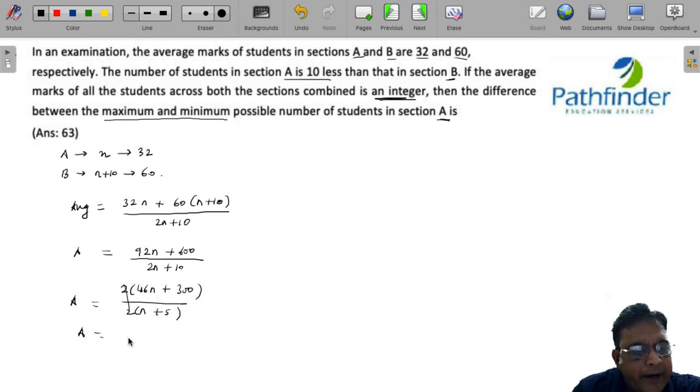I can write 46N plus 300 as 46 into N plus 5 plus 70 upon N plus 5.